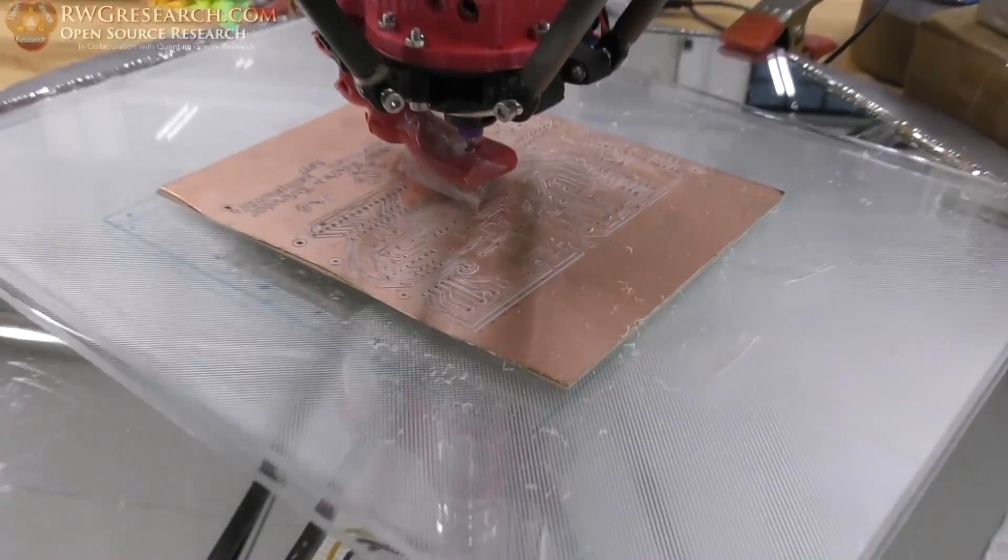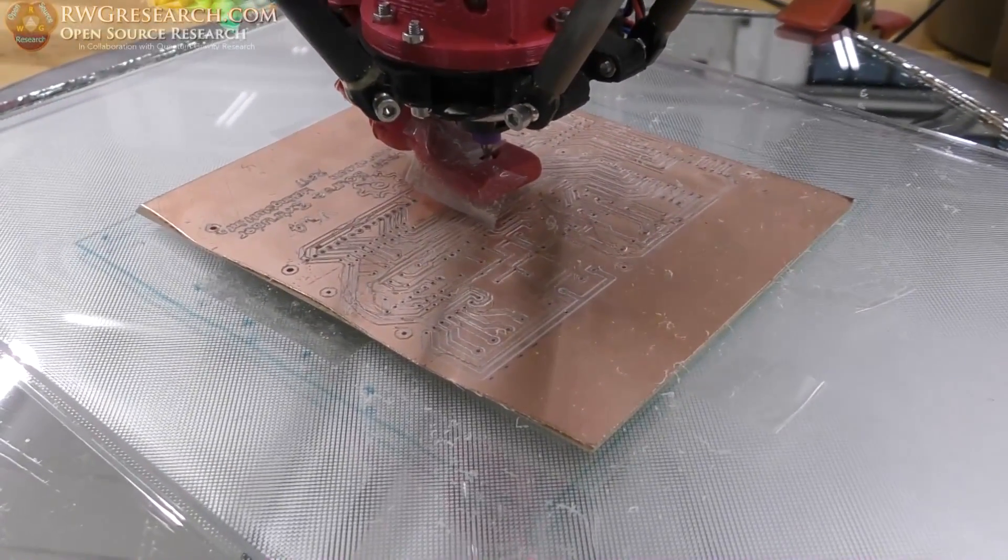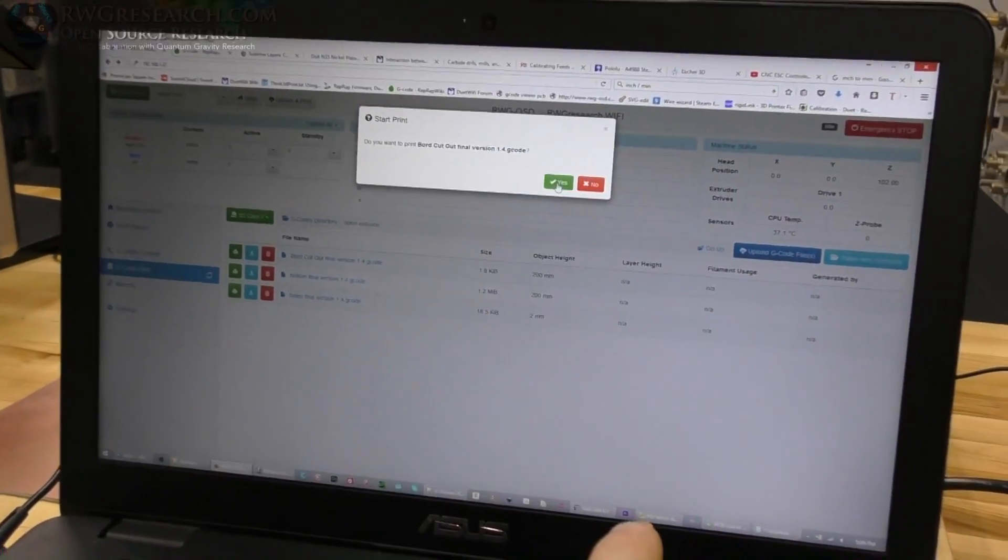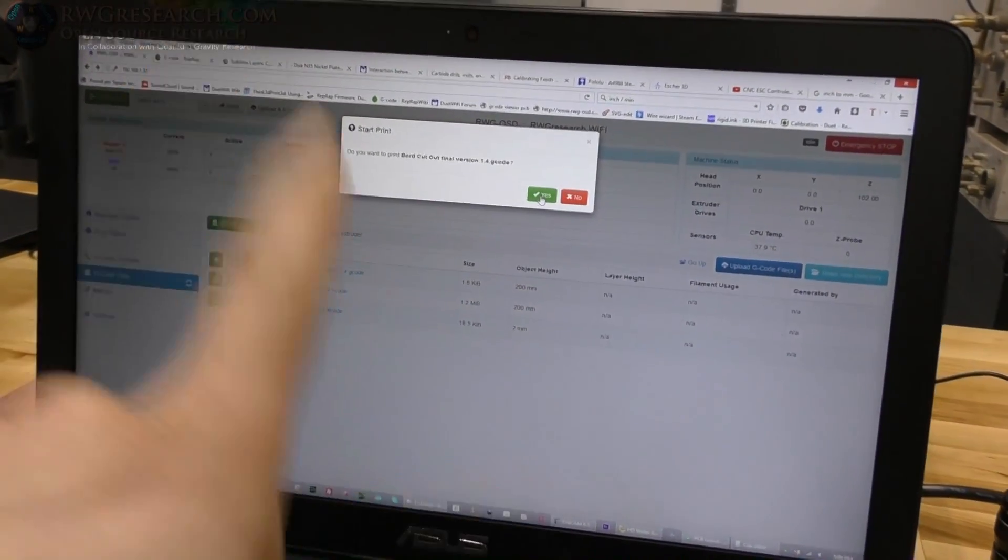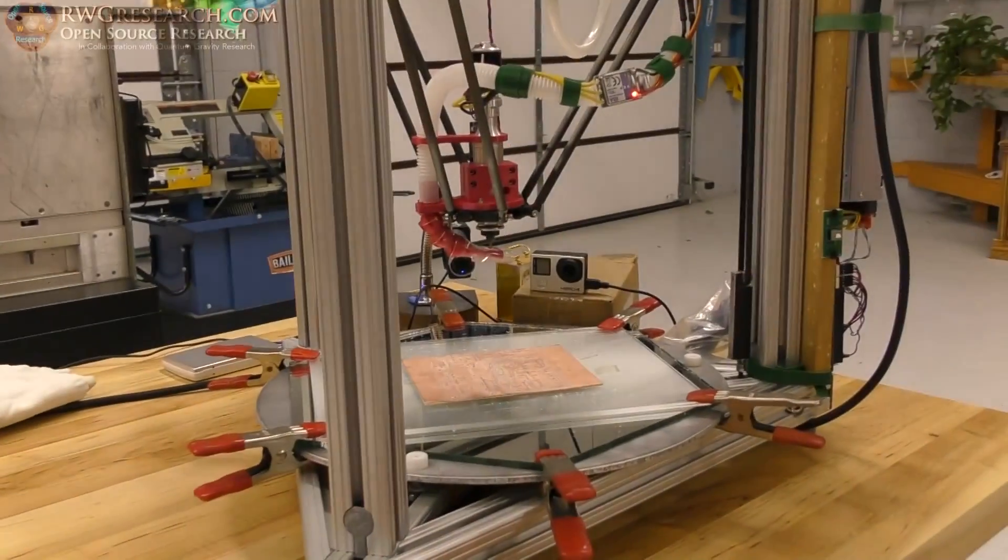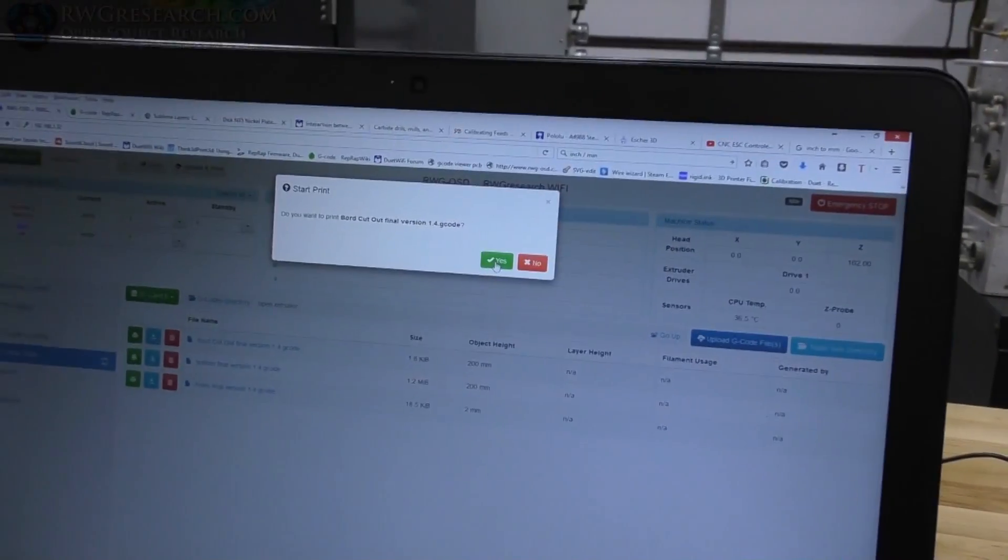Yep, now we're going to do a cutout, the board cutout. I have no idea if it's going to work. First time for this. All right, same method as before. Software, flat cam, and now to the print door, or CNC in my case. So let's give it a shot. Hopefully all goes well.